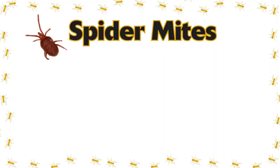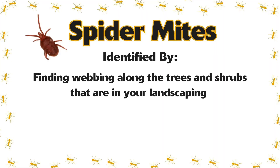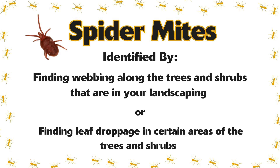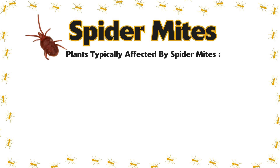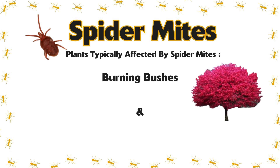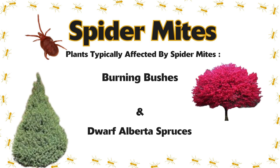The first one we're going to talk about is spider mites. Spider mites can typically be identified by finding webbing along the trees and shrubs that are in your landscaping. Another way to identify them is finding leaf droppage in certain areas of the tree and shrub. They typically affect burning bushes and dwarf Alberta spruces.